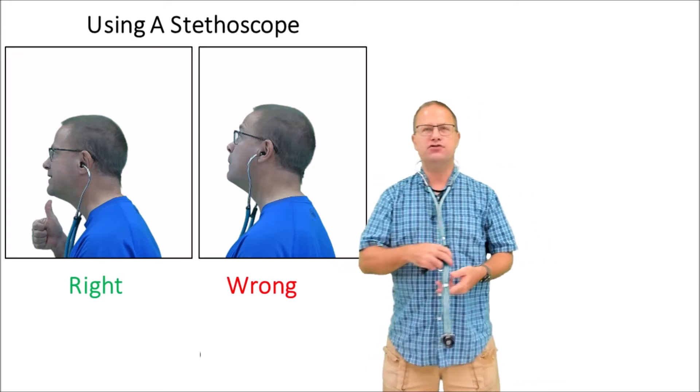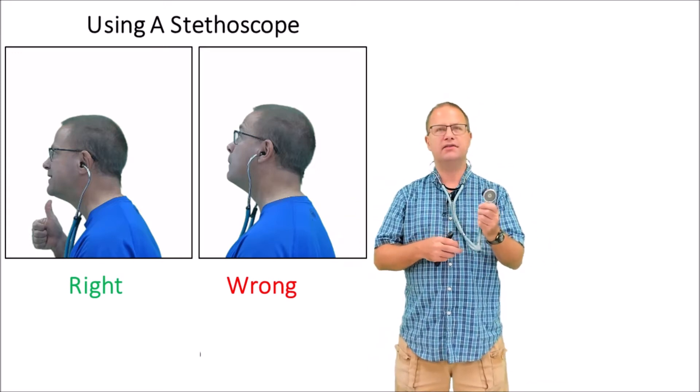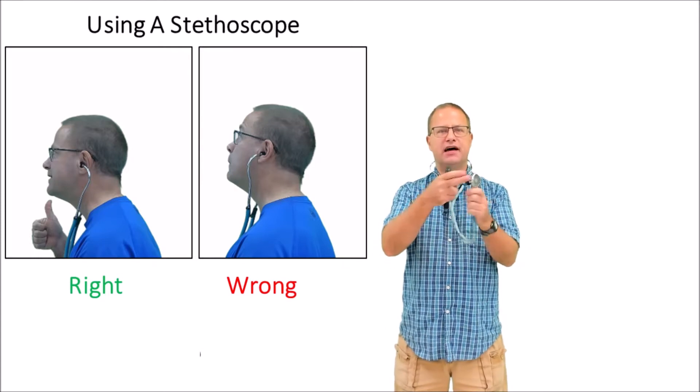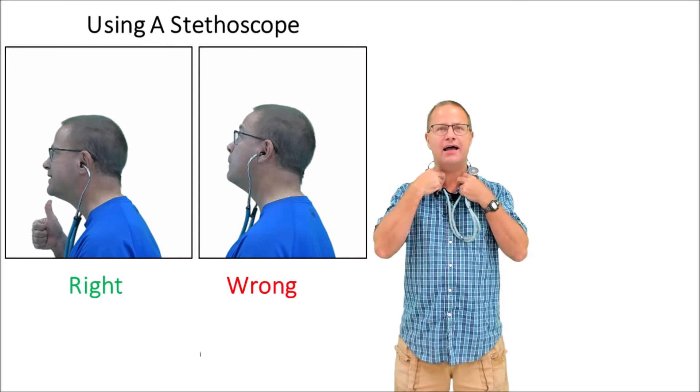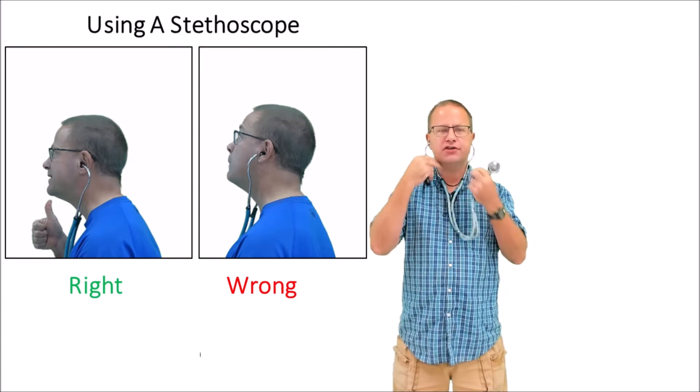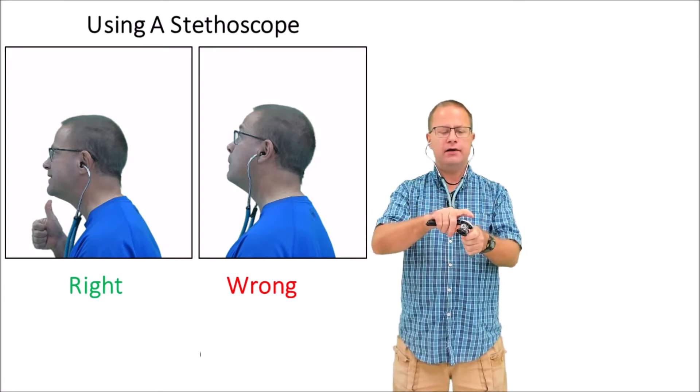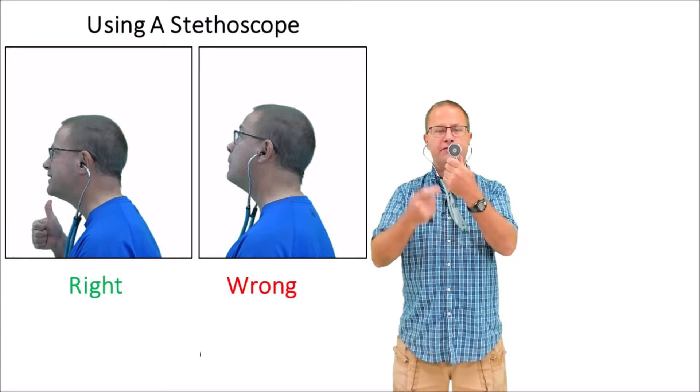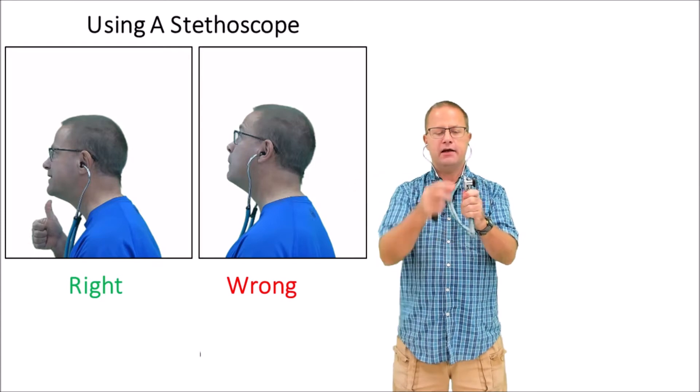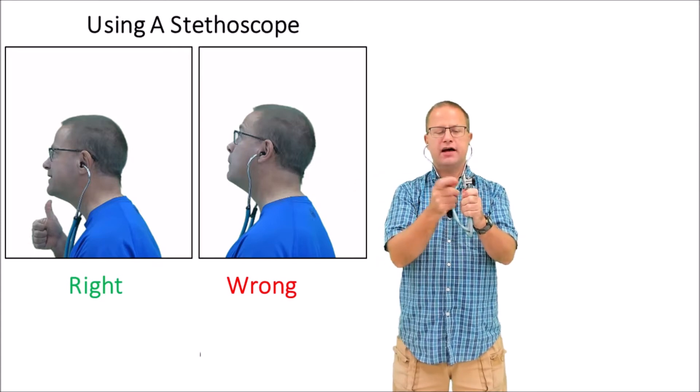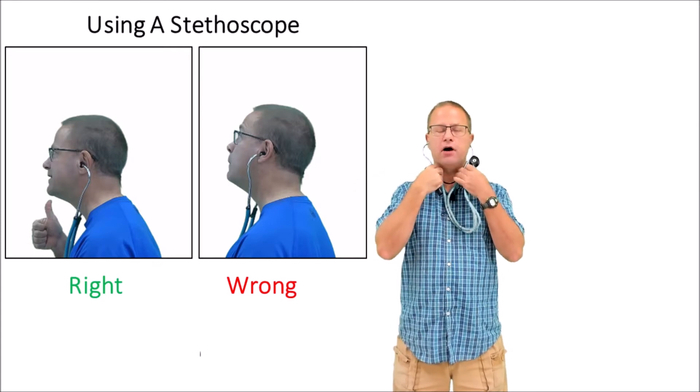You might have a one-bell or a two-bell stethoscope. If it has two different sides, realize that only one side is turned on at one time. Put those earpieces in your ear and tap on the bell. If you can hear a sound, you've got that side turned on. If not, turn it about 90 degrees and that will turn it on.